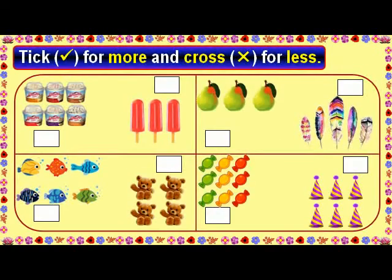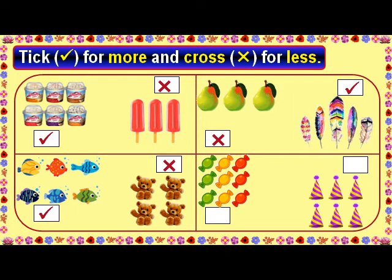Tick for more and cross for less. The ice cream cups are more. The ice cream sticks are less. The pears are less. The feathers are more. The fishes are more. The teddy bears are less. The toffees are more. The birthday caps are less.